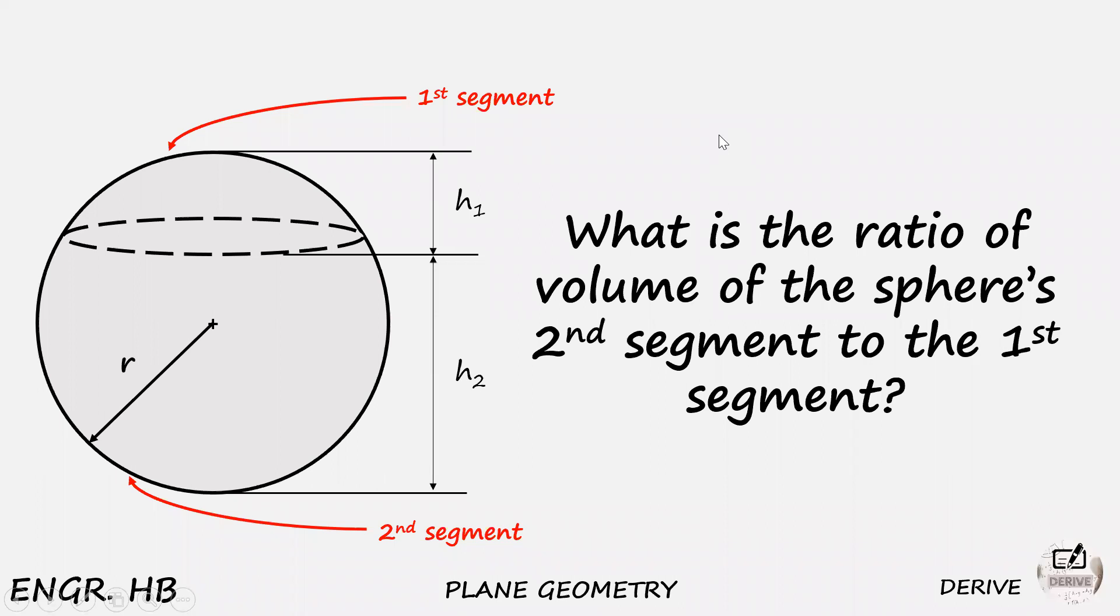So the question is, what is the ratio of volume of the sphere's second segment to the first segment? We have a sphere of radius small r here that is divided by the cutting plane. See the dotted lines or broken lines that divide the sphere into two segments with common radius r and two different values of altitude, which is represented by small h.